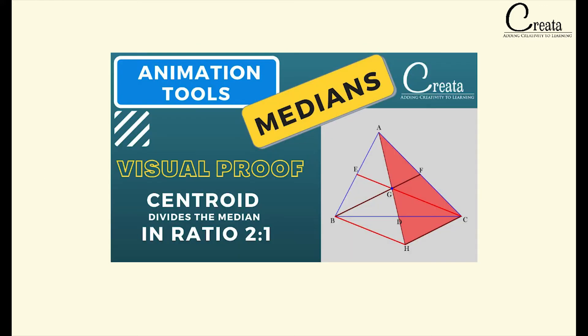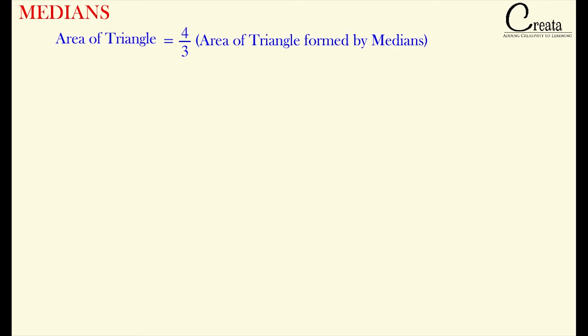The basics of the median we have covered in a separate video. The link is given in the description. Just check it out. So let's begin with the visual proof of this formula. The concept is the area of triangle is equal to 4 by 3 times the area of triangle formed by the medians.